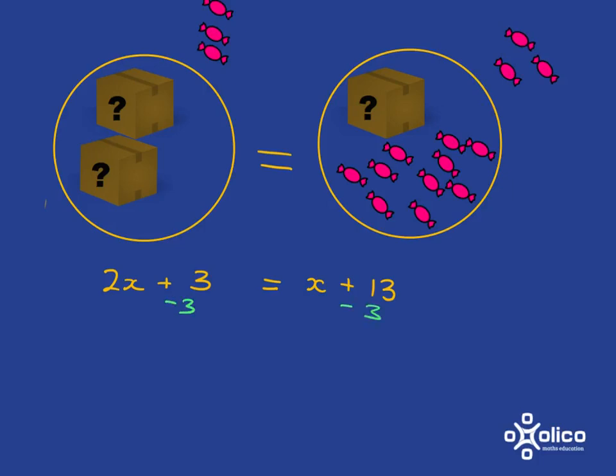In terms of the equation, that is what I have done. We still have exactly the same number of sweets on each side. In terms of my equation, what I have now is that 2x is equal to x plus 10.